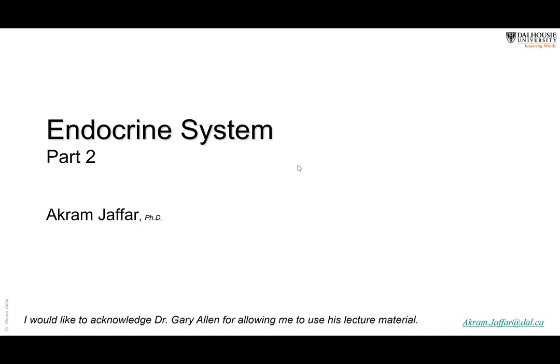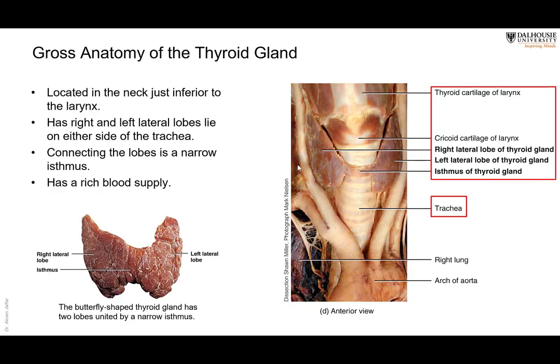Good afternoon. Today will be the second lecture on the endocrine system. It is the last lecture in block 2. Last time we were describing the endocrine system in general and differentiating between it and the nervous system. We also described mainly the function of the major endocrine gland in the body, which is the pituitary gland. Today we are going to revise the anatomy related to the other endocrine glands in the body, with some physiology added, but the main concentration will be about the anatomy.